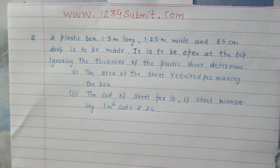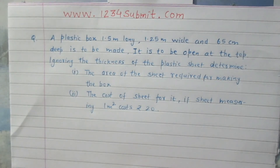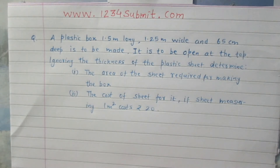A plastic box 1.5m long, 1.25m wide and 65cm deep is to be made. It is to be opened at the top, ignoring the thickness of the plastic sheet. Determine: 1. The area of the sheet required for making the box, 2. The cost of sheet for it, if sheet measuring 1m² costs Rs 20.